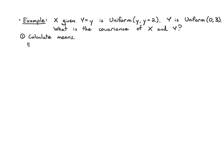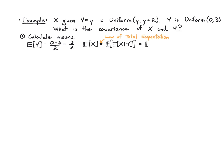First we need the means. The mean of y is just the mean of a Uniform(0,3), which is 3/2. To get the mean of x, we use the law of total expectation: e of x equals e of e of x given y. The conditional mean given y is halfway between y and y plus 2, since it's uniform — that's y plus 1. So e of x equals e of y plus 1, which is 3/2 plus 1 equals 5/2. We sketch the range to help get the integration limits.